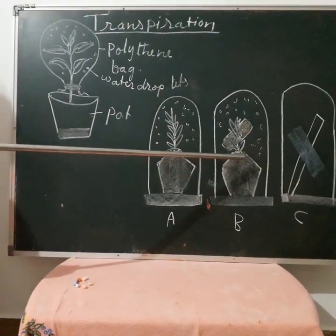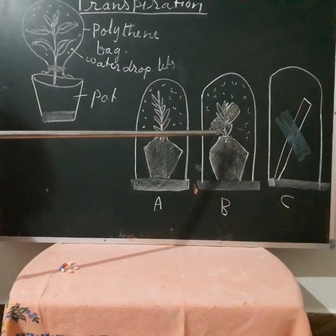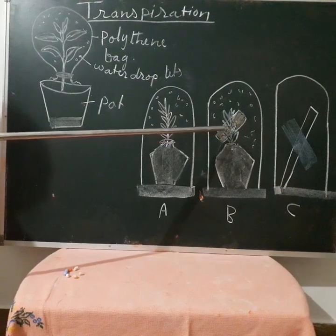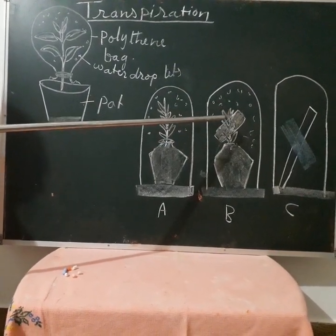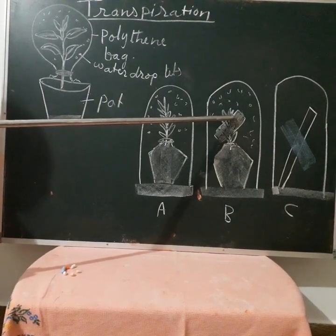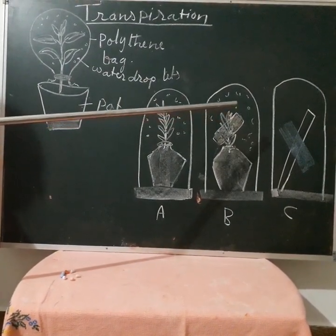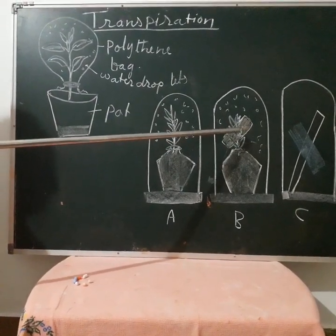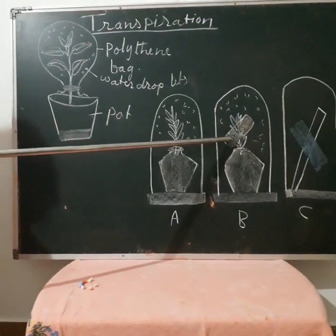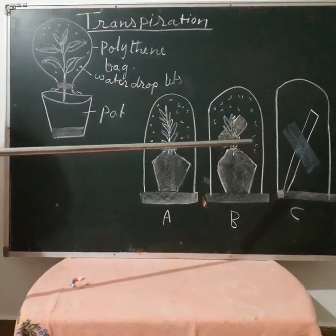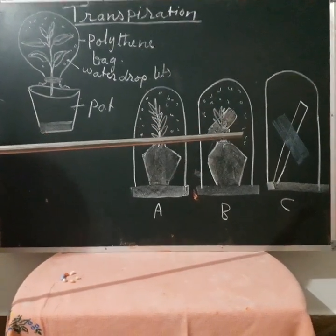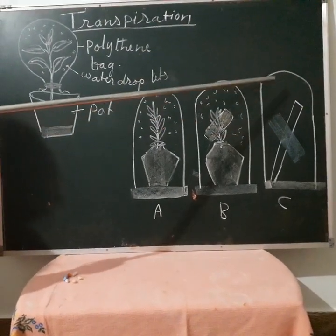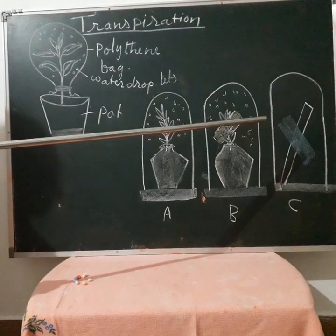In the next experiment, droplets of water can also be seen, and the cobalt chloride paper acts as an indicator. Cobalt chloride paper is blue when dry, and turns pink when it receives moisture. So the color change can be observed here. In the control experiment with no plant, there is no change in the cobalt chloride paper because there was no plant and no moisture inside the bag.